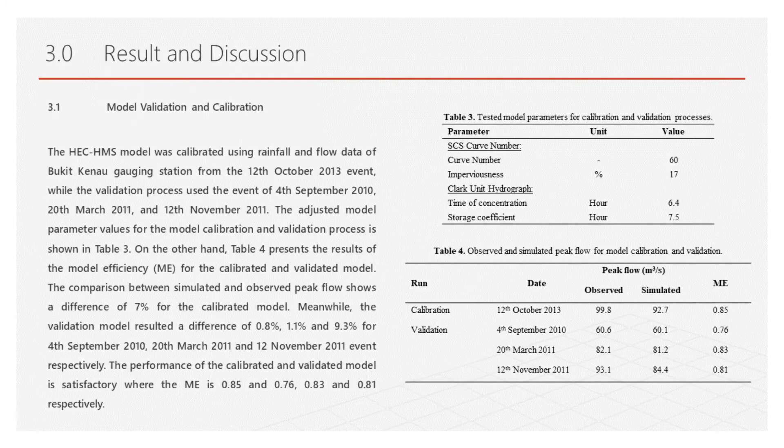Third is Results and Discussion. Section 3.1 covers Model Calibration and Validation. The HMS was calibrated using rainfall and flow data of Bukit Canal Gauging Station from the 12th October 2013 event, while the validation process used the events of 4th September 2010, 20th March 2011, and 12th November 2012. The adjusted model parameter values for the calibration and validation process are shown in Table 3, while Table 4 presents the results of the model ME for the calibrated and validated models.